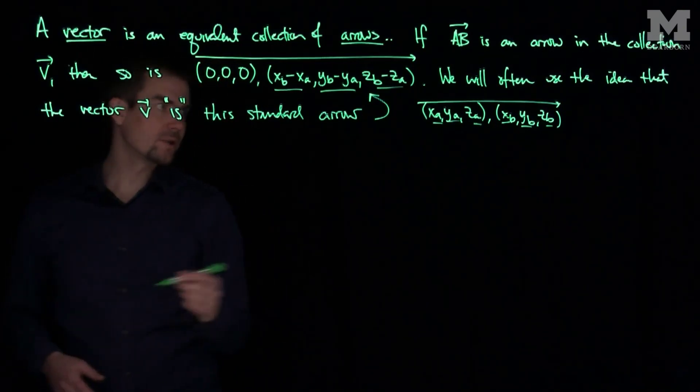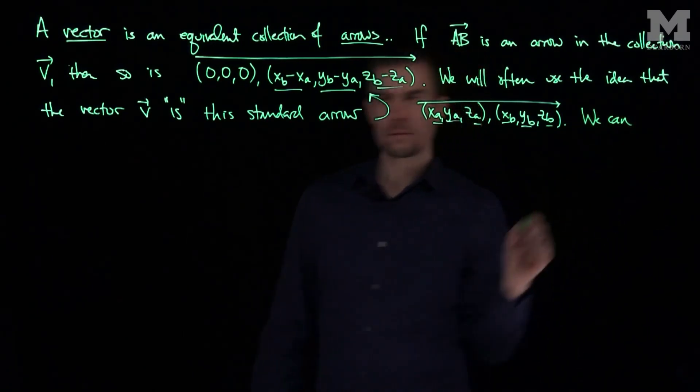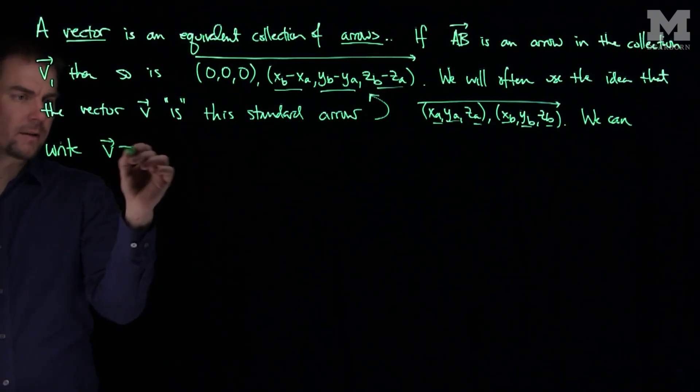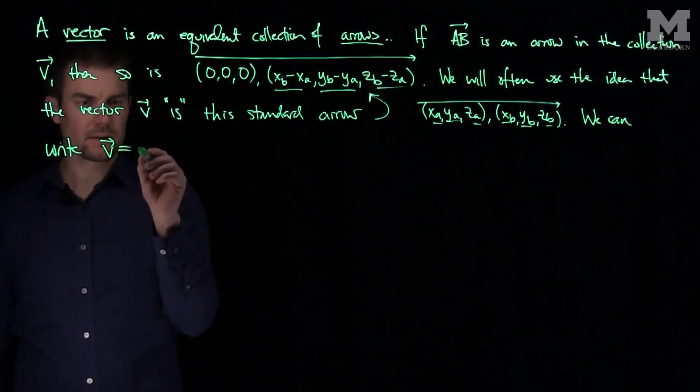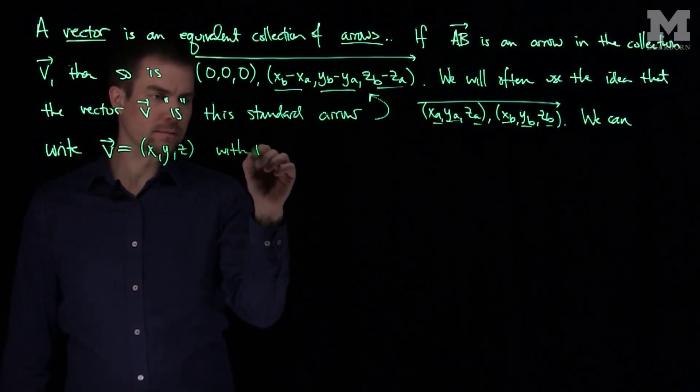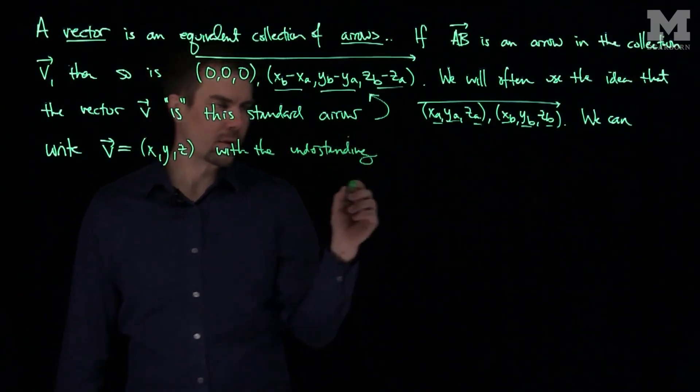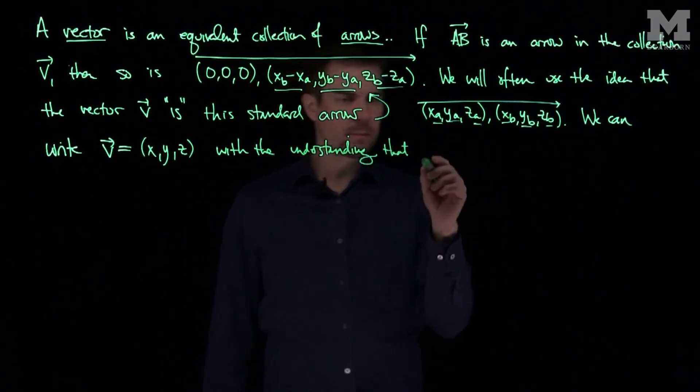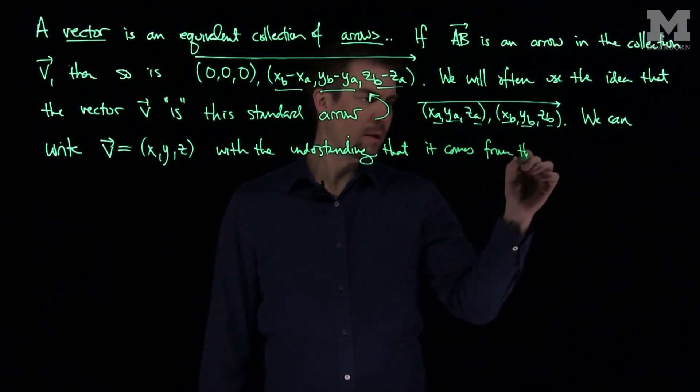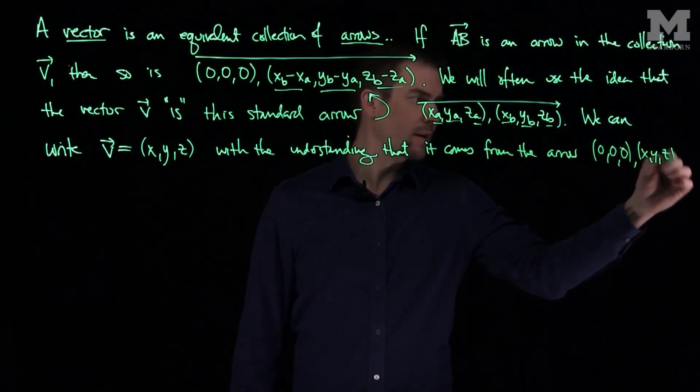We can write the vector V as a point (X,Y,Z), with the understanding that it comes from the arrow (0,0,0) to (X,Y,Z).